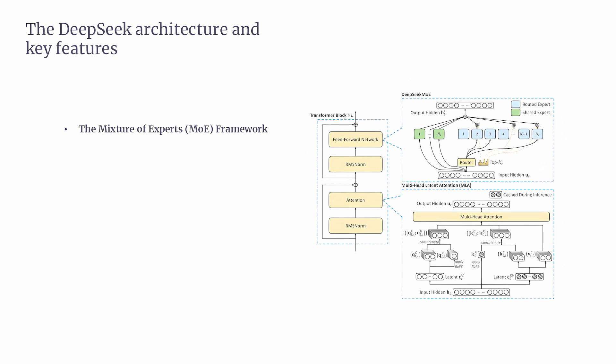The model has 671 billion parameters in total. However, at any given time, it uses only 37 billion of them. This selective activation makes the model more efficient, reducing computational costs while still delivering high-quality results.